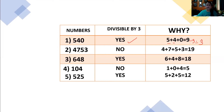How about 4,753? Let us add: 4 plus 7 is 11, plus 5 is 16, plus 3 is 19. Is 19 divisible by 3? No. Why? Because when we divide 19 by 3, there is a remainder. So it is not divisible by 3.